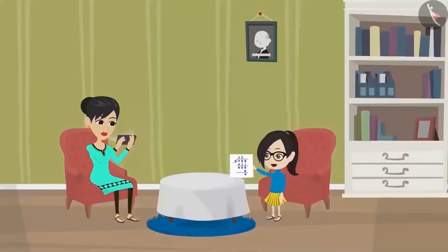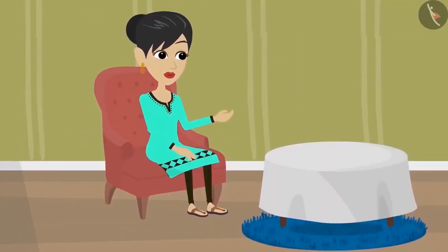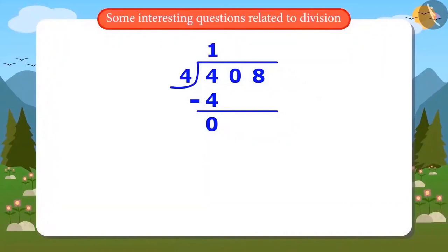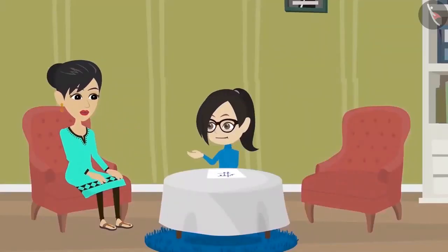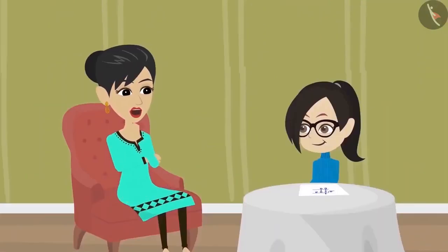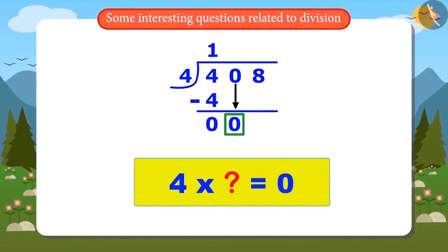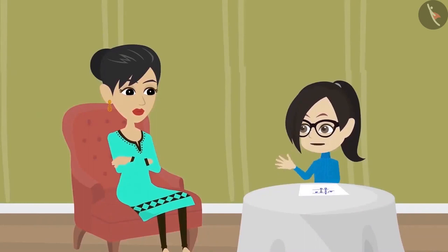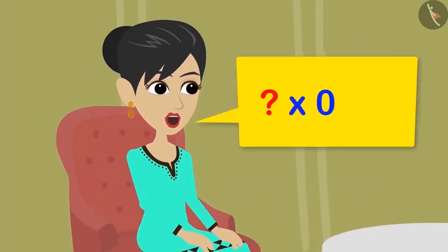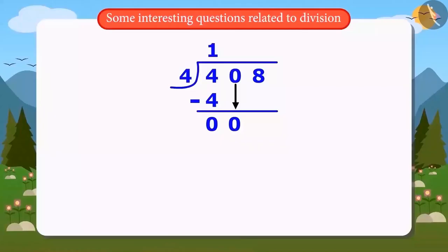Now I will have to ask Mummy for help. Mummy, I think I have made a mistake in dividing — can you please help me? Look Vandana, you made a mistake at this step. Now I understood what you were doing wrong. When you write 0 down, you have to think: by which number should we multiply 4 to get the answer as 0? Whenever we multiply any number by 0, we get the answer as 0 only. So here we multiply 4 by 0 and get 0 as the answer, and the remainder will be 0.